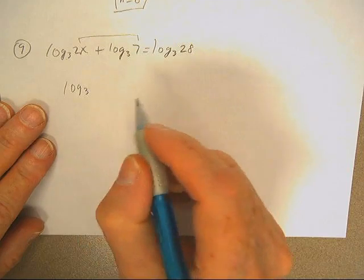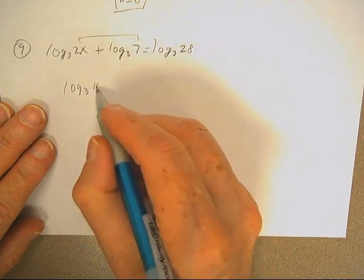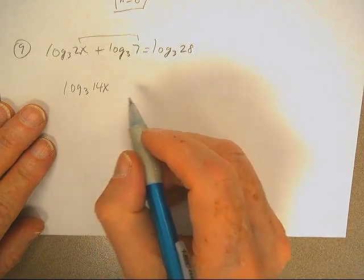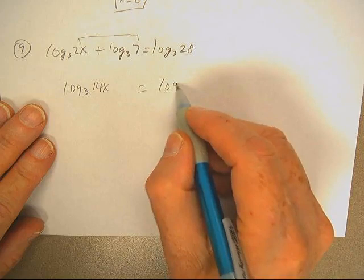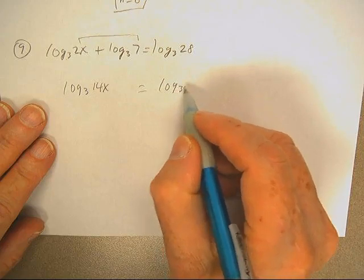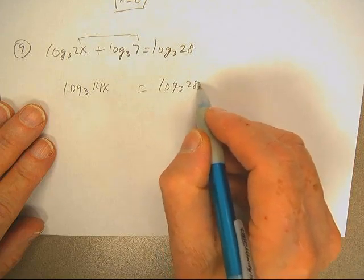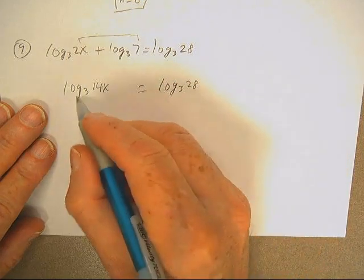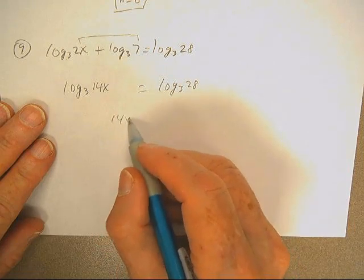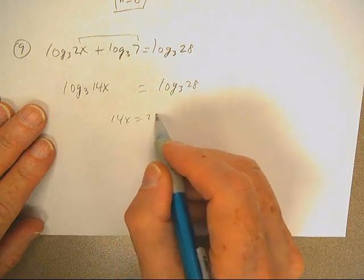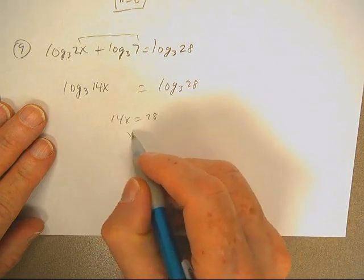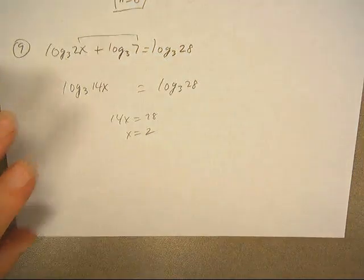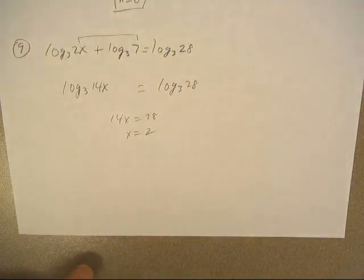So this is log base 3 of 14x equals log base 3 of 28. So 14x has got to equal 28, and x has to be 2. There's that one. We'll be back.